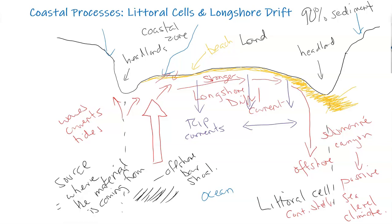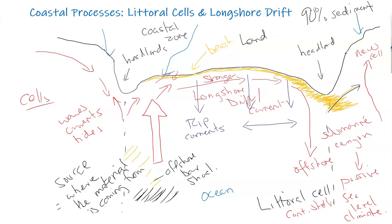Longshore drift can also distribute sand into the next cell beyond the headland, where wave refraction begins a new cell. You can also find secondary cells on both sides of a headland, pushing sediment to form offshore bars that cycle back around. Like in Southern California, you can have long connected cells that move sediment hundreds of miles along the coastline — for example, from Northern California and Monterey all the way down to San Diego.